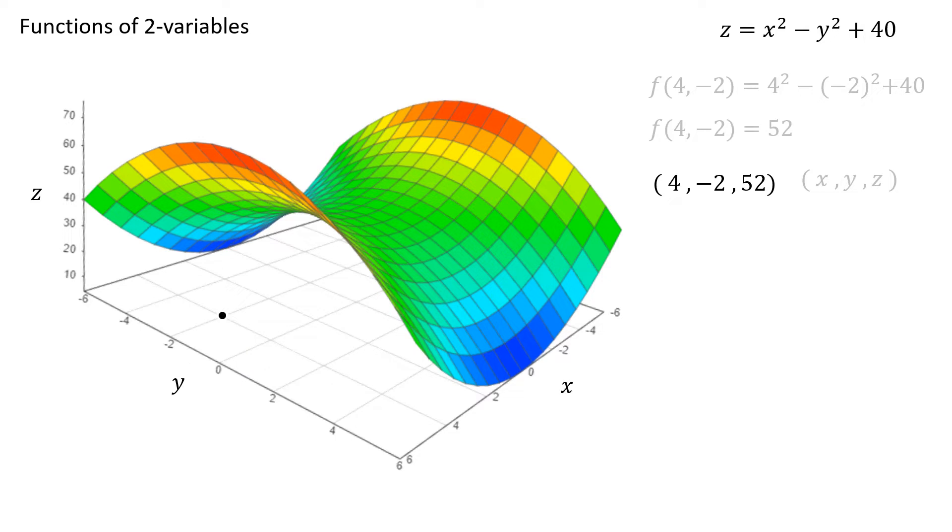But what does the 52 mean? It means if we went straight up 52 spaces and found a point, that would be on the surface of this graph with a z value or function value of 52.